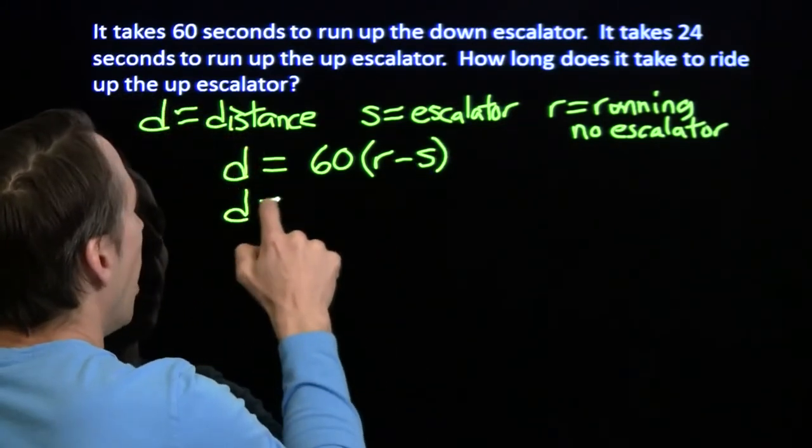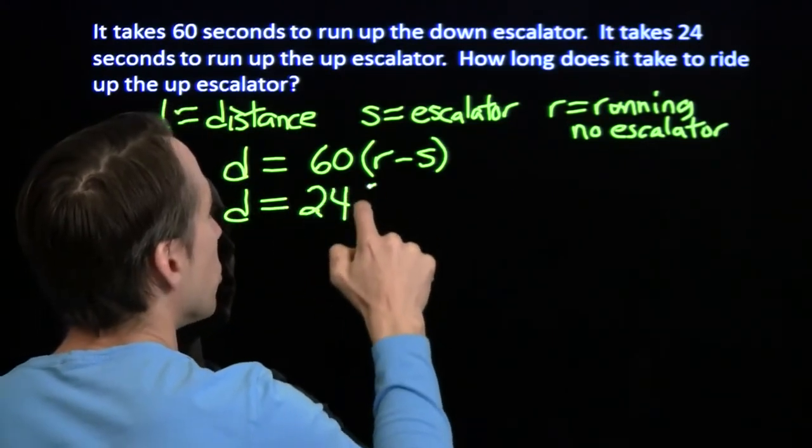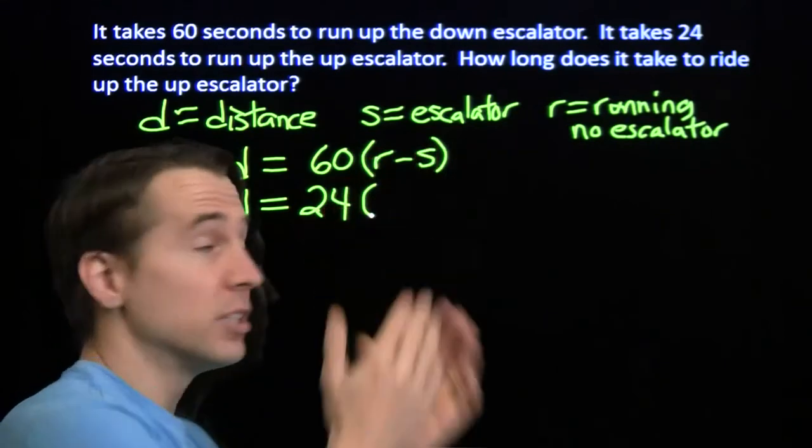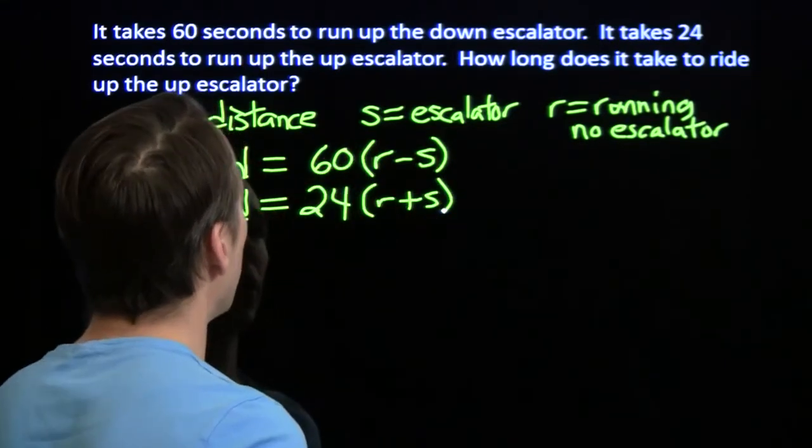So what about when we run up the up escalator? Well, now our time is 24, and our rate is the sum of these, because our running is working together with the speed of the escalator.